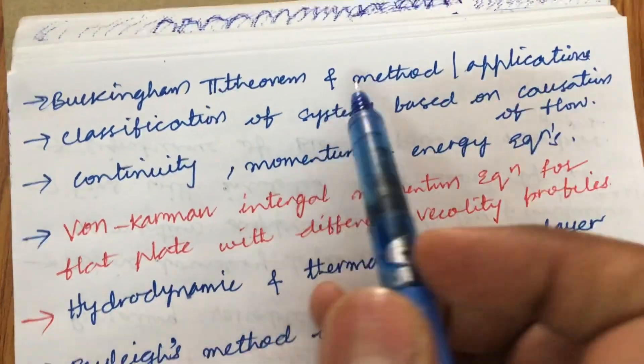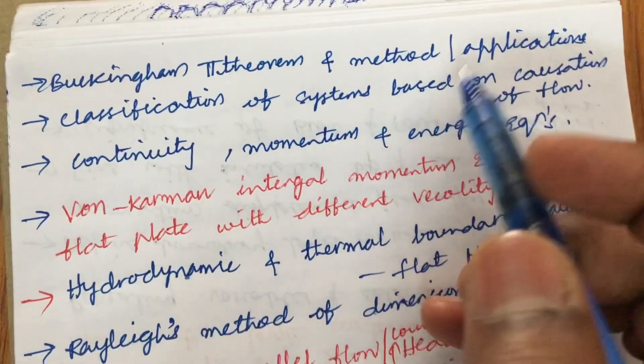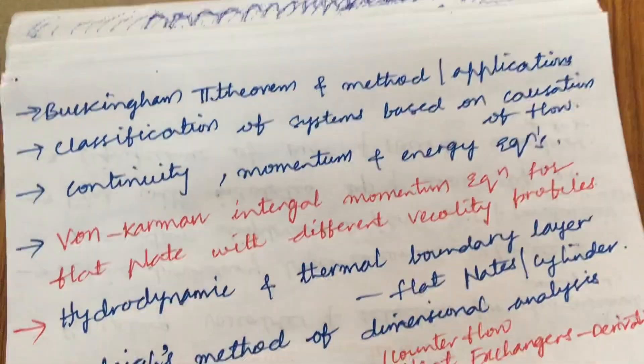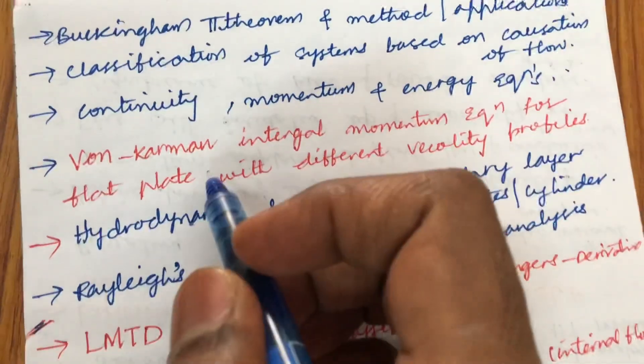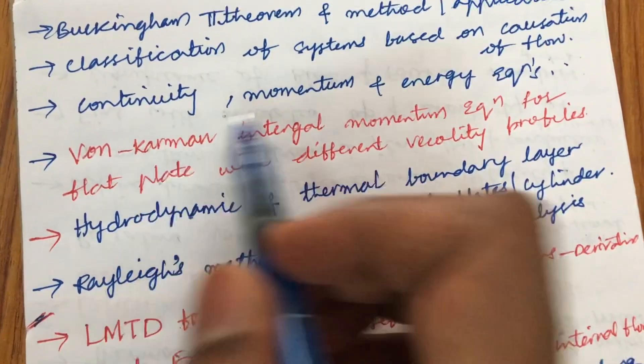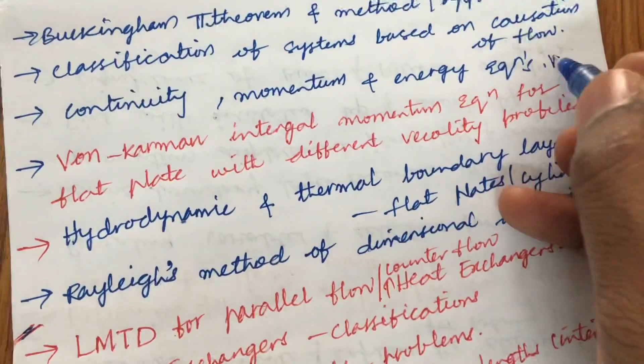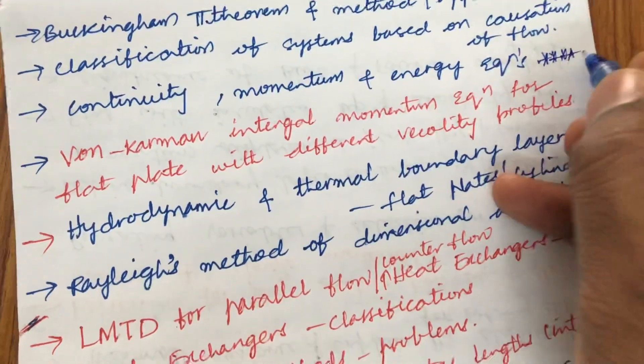Later, the Buckingham pi theorem and its method and applications. Later, the classification of systems based on causation of flows. Derive an expression for continuity, momentum, and energy equations is one of the gunshot questions from the second unit.